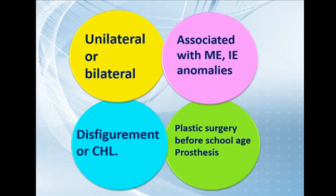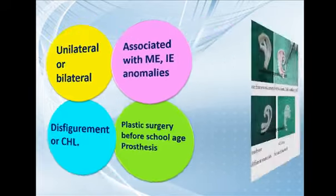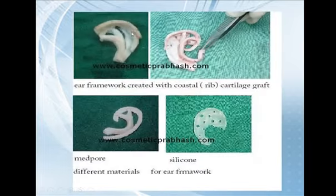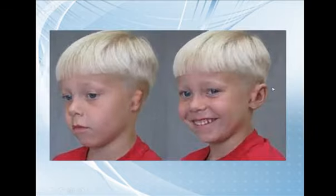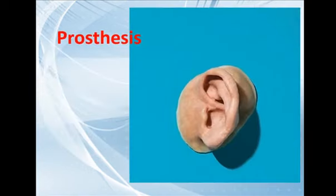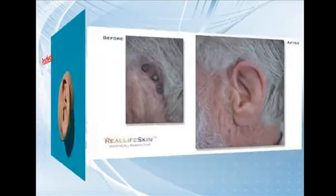Plastic surgery can be performed just before school age — before the child goes to school and his colleagues can comment on his ear, which causes a psychological problem. They use costal cartilage, refashioned to simulate the cartilage of the auricle and then covered by skin. This is microtia and this is the appearance after surgery. There is also a prosthesis that can be anchored to the skull using magnets.